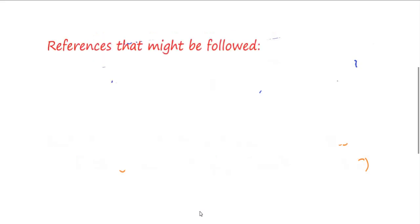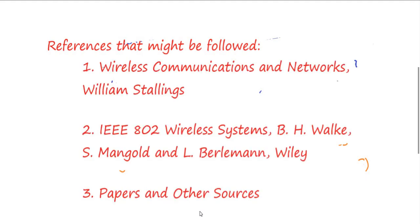I will give you some references to follow. The first is Wireless Communications and Networks by William Stallings. The second is IEEE 802 Wireless Systems by Walke, Mangold, and Berlemann, published by Wiley. In this course I'll be collecting content from different sources based on what is required, so the sources may not be consistent. I might also draw from different papers to keep the course as updated as possible, which may mean the contents are a bit disorganized.